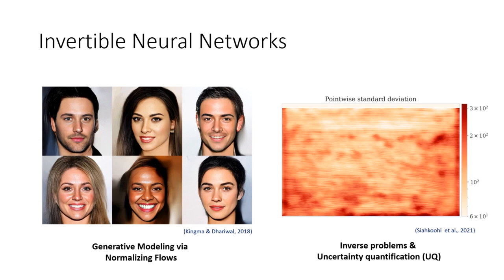One example using the GLOW network produces very high-resolution images sampled from basically a random Gaussian distribution. Apart from generative modeling, there are also other applications of invertible neural networks that include, for example, uncertainty quantification for inverse problems in the context of seismic imaging.